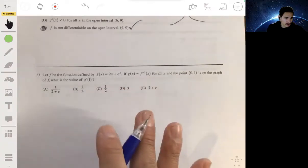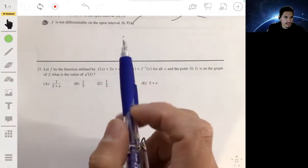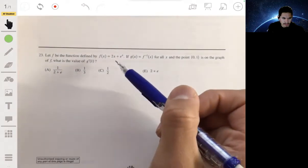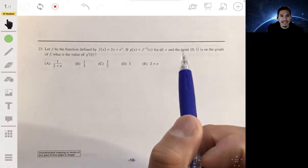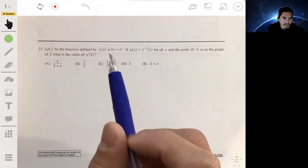Problem 23. Let f be the function defined by f of x equals 2x plus e to the x and we're told that g of x is the inverse function of f for all x and that point (0,1) is on the graph of f. What is the value of g prime of 1?